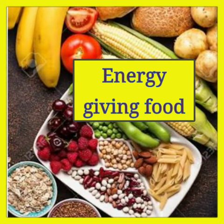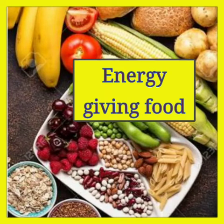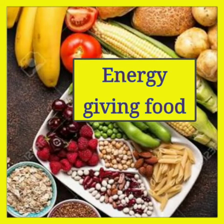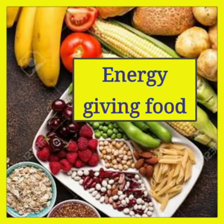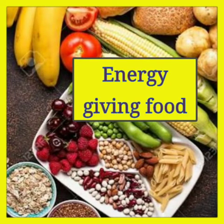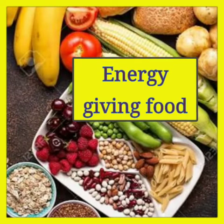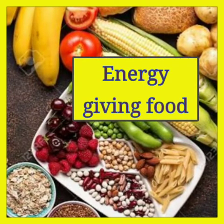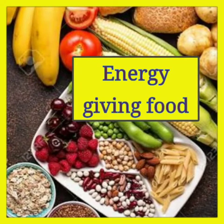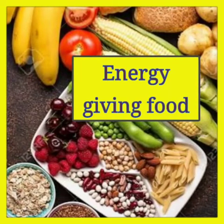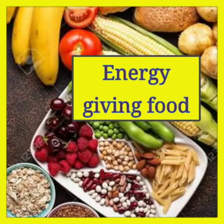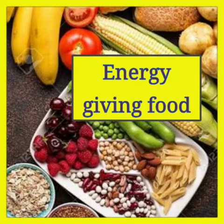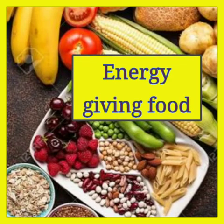First, let's look at carbohydrates. Carbohydrate is called energy-giving food — we get more energy from carbohydrates. It has two main types: sugar and starch. Some food items that contain carbohydrates are cereals, fruits, corn, potato, and honey — these are sources of carbohydrates.